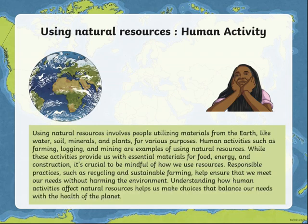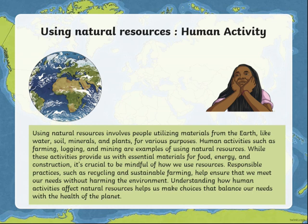Then we have Using Natural Resources, which is a Human Activity. Using Natural Resources involves people utilizing materials from the earth, like water, soil, minerals, and plants, for various purposes. Human activities such as farming, logging, and mining are examples of using natural resources. While these activities provide us with essential materials for food, energy, and construction, it is crucial to be mindful of how we use resources. Responsible practices such as recycling and sustainable farming help ensure that we meet our needs without harming the environment. Understanding how human activities affect natural resources helps us make choices that balance our needs with the health of the planet.